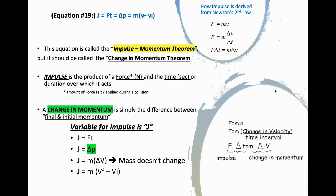A change in momentum, represented by delta p, means the triangle is 'the change in' and p stands for momentum — it's simply the difference between your final and initial momentum. At its most basic format, impulse J equals F times T. J is also equal to the change in momentum. Since mass doesn't change, delta p relies on the change in velocity, so J equals mass times delta v. Delta v is your final velocity minus your initial velocity.